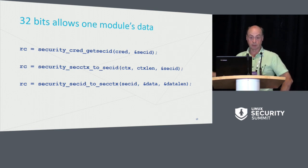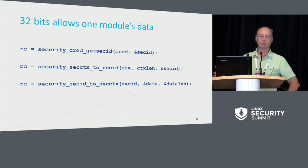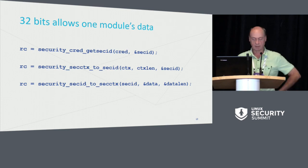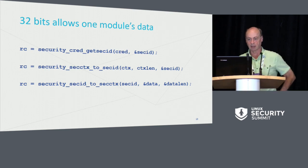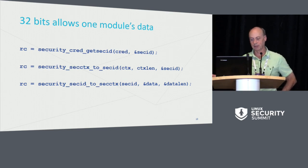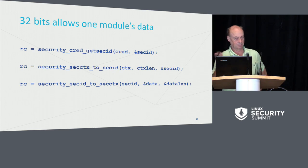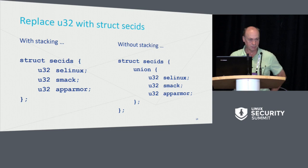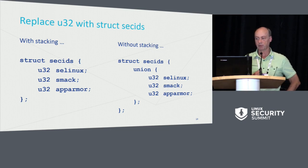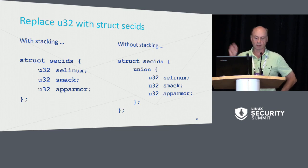We have a set of interfaces that use the security module SecID — for example, the audit system takes the SecID that exists and uses that to look up the text string it wants to print when it creates the audit record. If you've only got 32 bits and you've got more information than that from the security modules, you can't really use that. The obvious thing you're going to do is replace this 32-bit entity with a bigger entity.